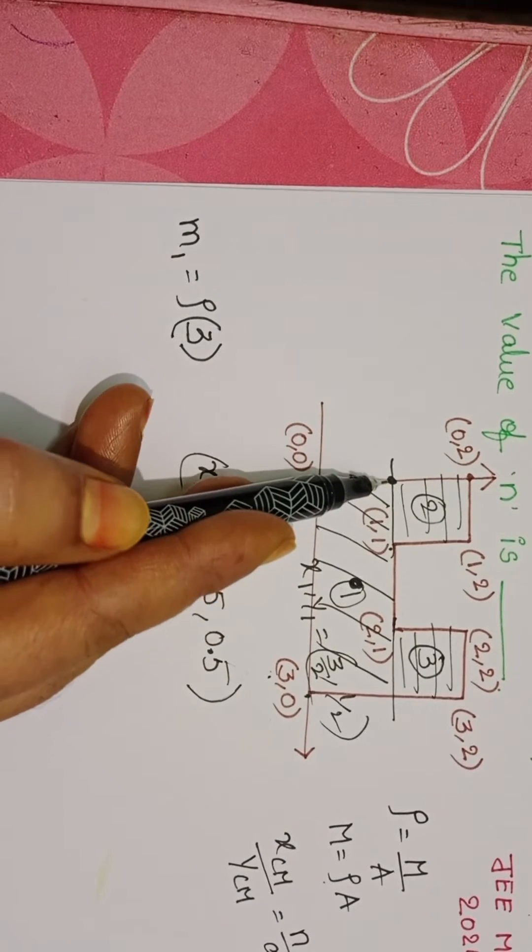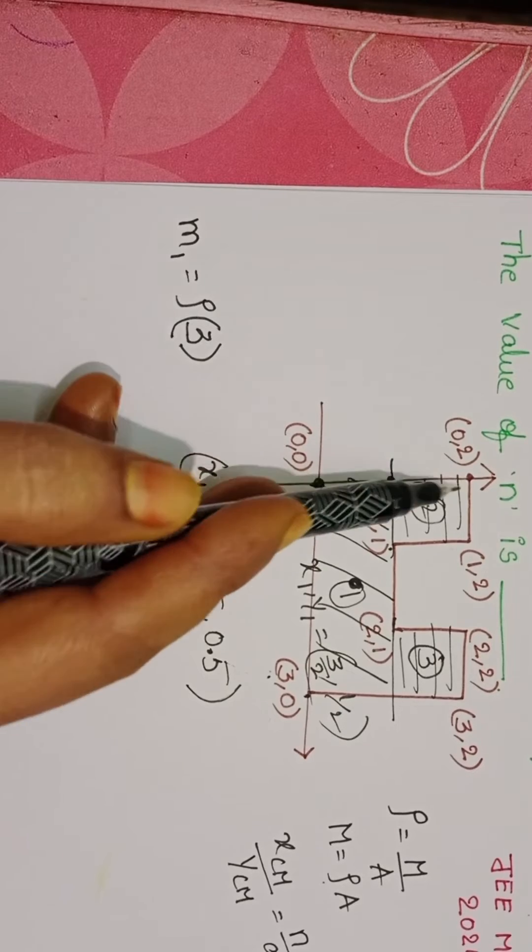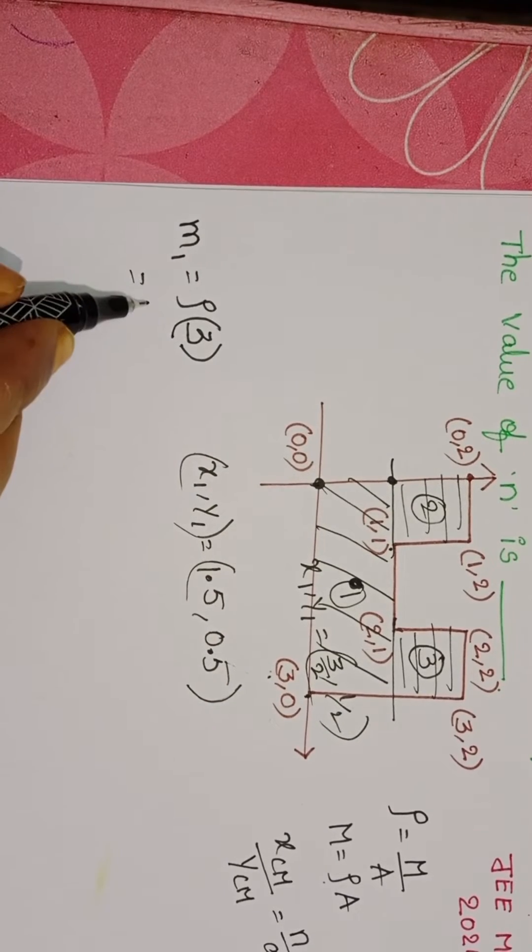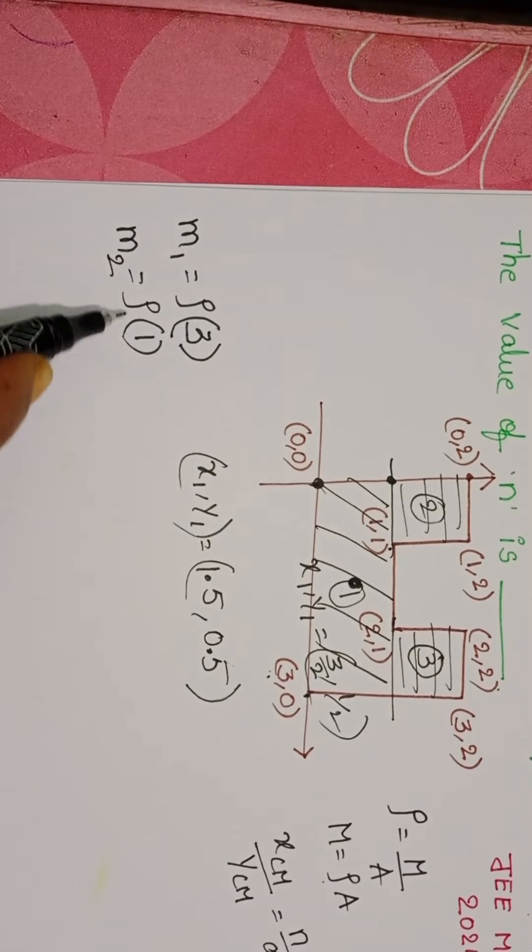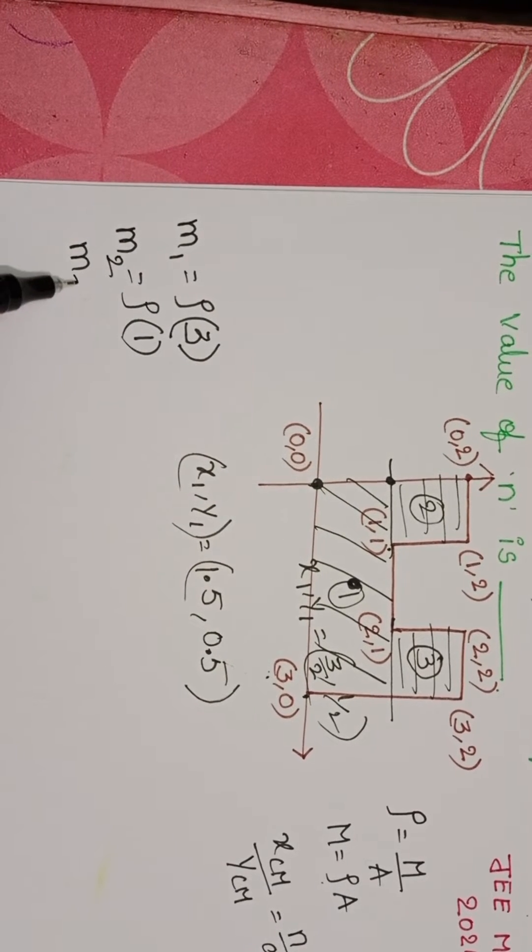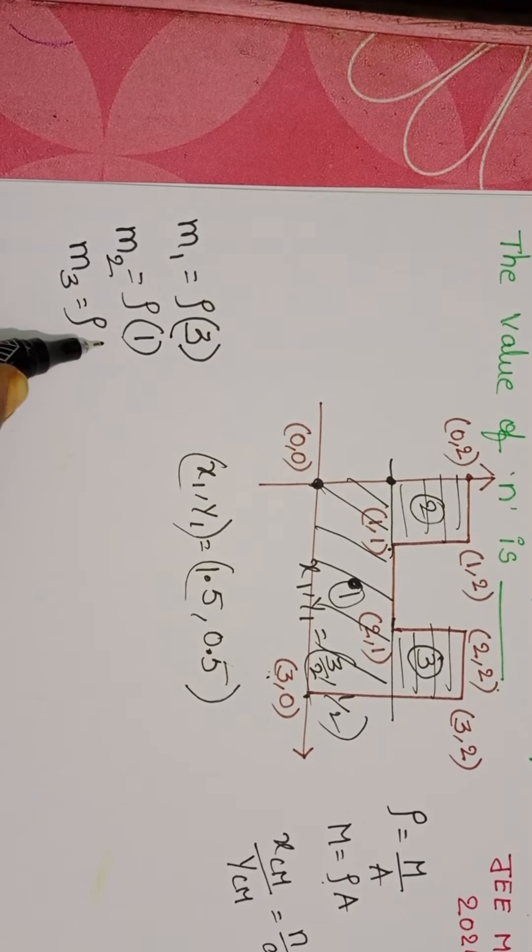This is 1, and from 1 to 2, 2 minus 1 equals 1. So rho into 1 into 1 equals 1. Mass of the second part is rho 1. And mass of the third part also same, rho into 1.